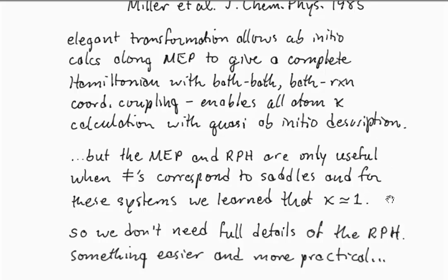So you can do all this work, and you can create a reaction path Hamiltonian, but ultimately what it tells you is that the things that it could potentially account for are already pretty well accounted for in transition state theory. So usually we don't need the full details of the reaction path Hamiltonian.